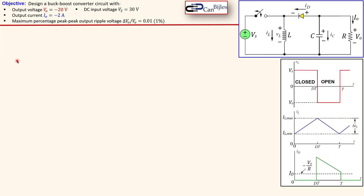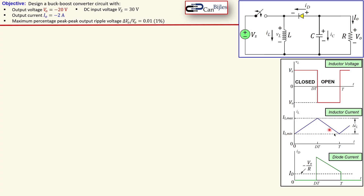Before we dive into the calculations in detail, let's first see the waveform. We assume continuous current mode — we will check that of course. We'll see the switch-closed and switch-open operation shown here. The inductor voltage will be VS when the switch is closed, and when the switch is opened the inductor voltage will be the minus of the output voltage. The inductor current will have an increasing and decreasing shape — that is the ripple in the inductor current. The diode current is also shown, where you see the average diode current related to the average output current.